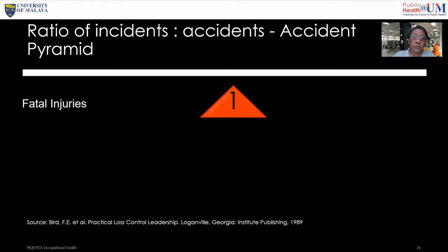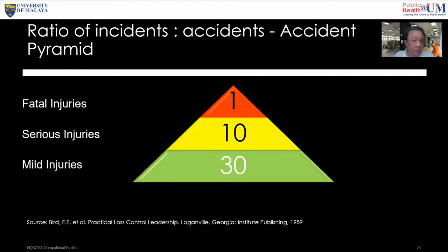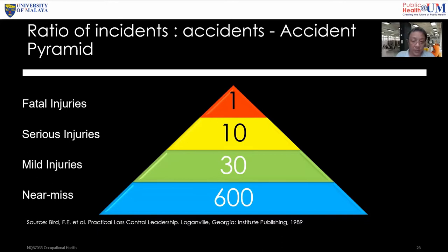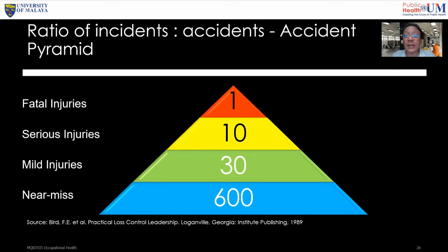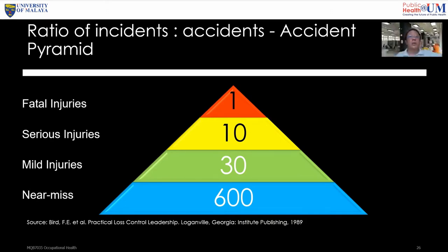For every one fatal injury, there are 10 serious injuries, 30 minor injuries, and 600 near misses — giving 640 preceding incidents. If you identify all near misses, you can prevent minor injuries, serious injuries, and ultimately fatal injuries. When you have one fatal injury, it means you missed 640 incidents where action should have been taken. This is what the accident pyramid illustrates.